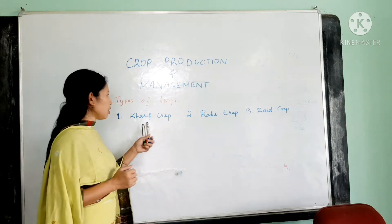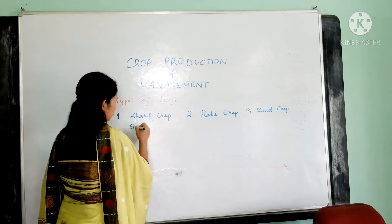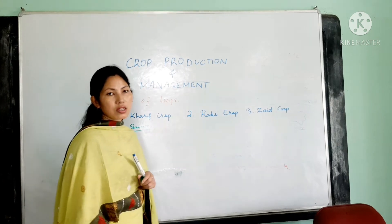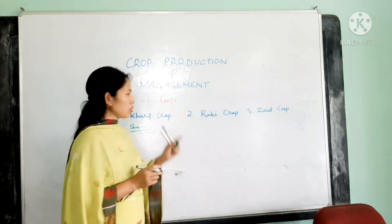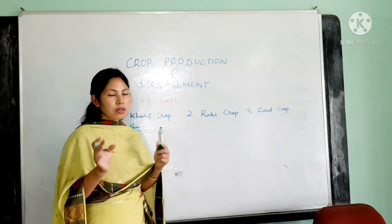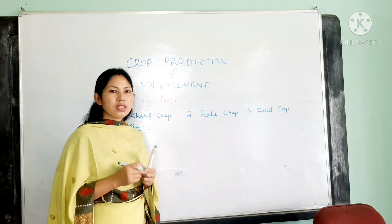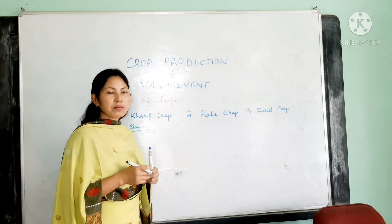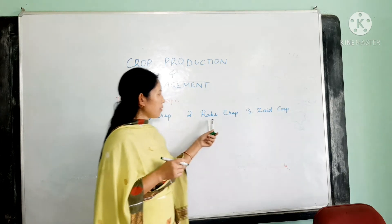The first type is the Kharif crop, also known as the summer crop. These are grown during the summer season or the rainy season when there is plenty of rainfall, because such crops require a lot of water. So Kharif crops are grown mostly during the summer time — for example, paddy and cotton.